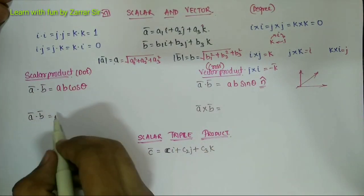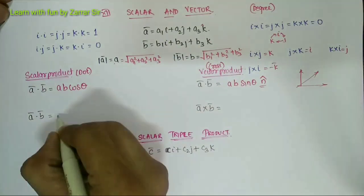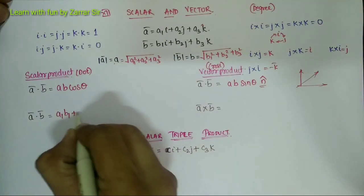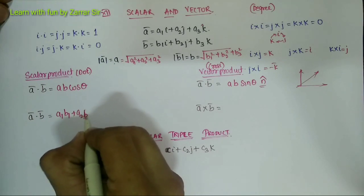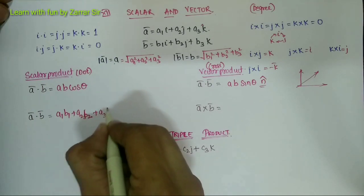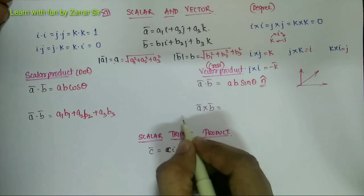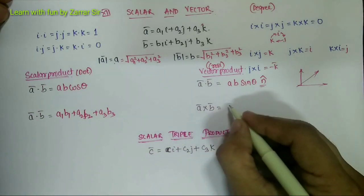Now a bar dot b bar would be a1 b1 plus a2 b2 plus a3 b3.